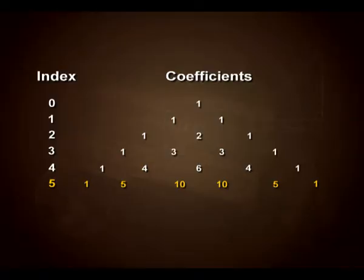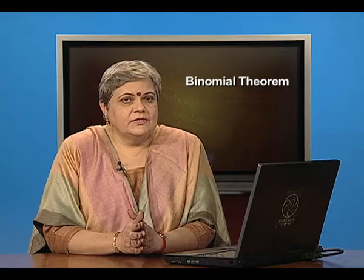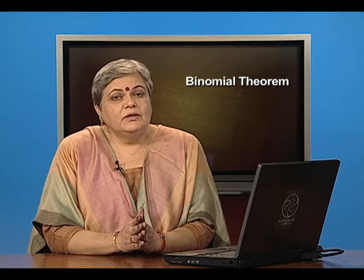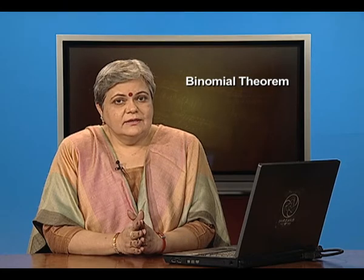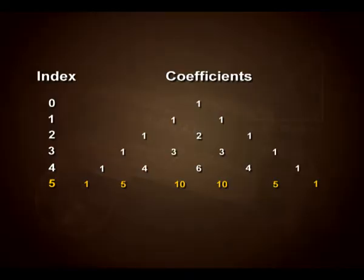Now let us focus on the coefficients of these expansions. When the index is 0 we have just 1; when the index is 1 the coefficients are 1 and 1. Writing these coefficients in a certain pattern, I want you to pick up on it and tell me: what would be the coefficients when the index is 5? The pattern suggests that index 5 will give coefficients 1, 5, 10, 10, 5, and 1.